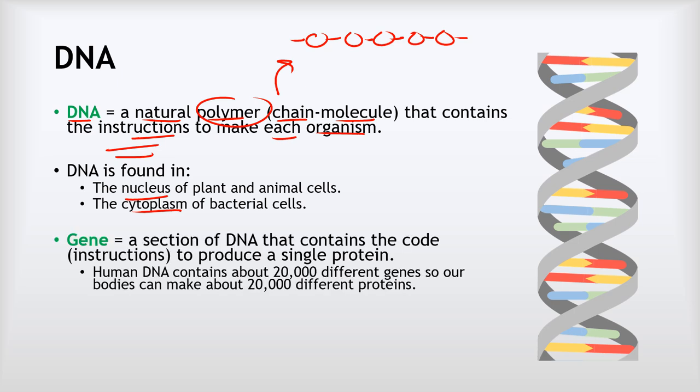Often when we talk about DNA, we talk about genes. A gene is a section of DNA that contains the code, the instructions, to produce a single protein. That's a really important definition. Often when I ask students what a gene is, they talk in vague terms about it being something you get from your parents or something that controls what you are. Both of those are kind of true, but they're not detailed enough for a scientific answer. So we want to say that a gene is a section of DNA that contains the code or the instructions to produce a single protein.